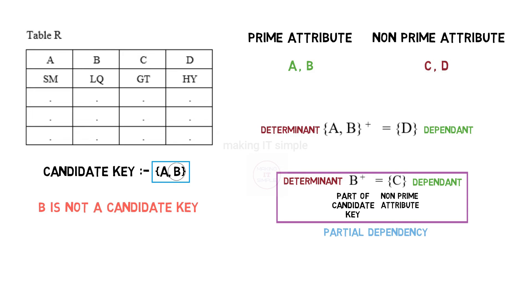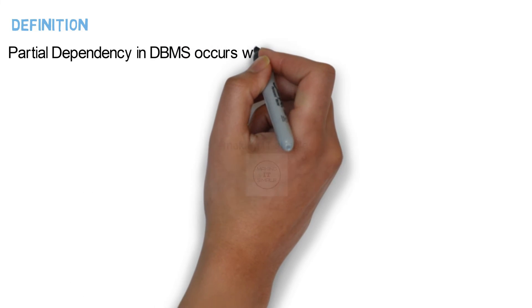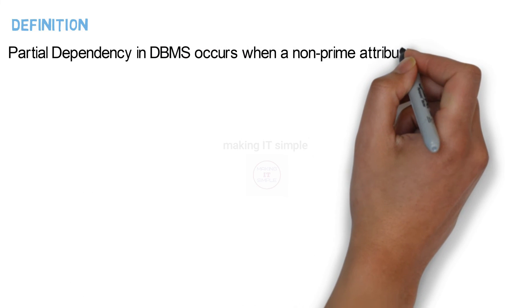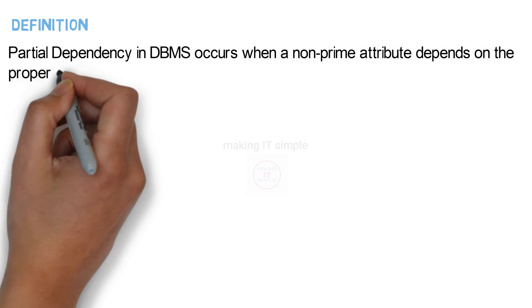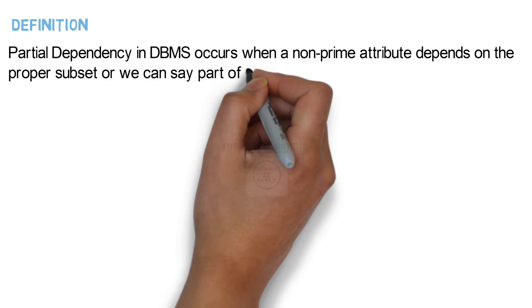It is called partial dependency because it depends on a part of the candidate key and not on the complete candidate key. In the first case, a non-prime attribute is determined using the complete candidate key, so that is not a partial dependency. The definition for partial dependency goes as follows: partial dependency in a DBMS occurs when a non-prime attribute depends on a proper subset — or part — of the candidate key.